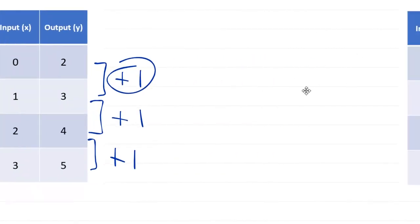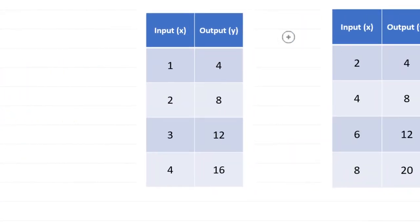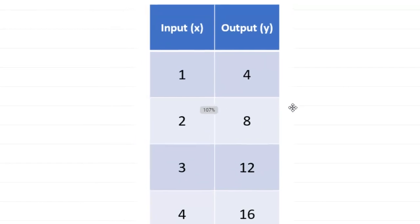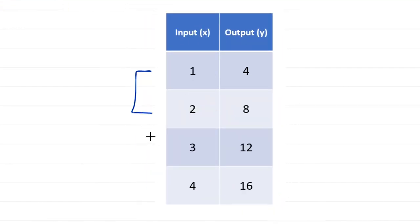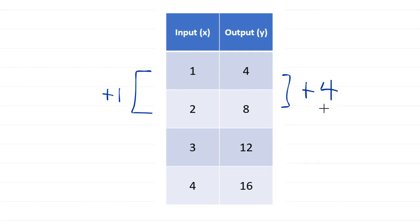Let's look at one where we don't have 1s everywhere. In this next example, from 1 to 2, x increases by 1 and the output goes up by 4. So that means if this is a linear function, any time I increase x by 1, y should increase by 4 every time — 100% of the time. If just one of them doesn't change by that amount, it's not linear.